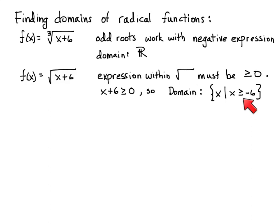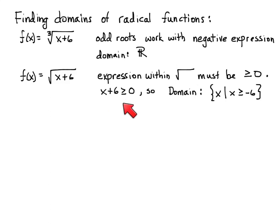These domain restrictions look a little different. With division by zero we say 'x does not equal' a value. Here we say x must be greater than or equal to negative 6. The process is simply setting the expression inside the radical greater than or equal to zero, solving for x. We can then write it in set-builder notation as a proper expression for the domain of that function.